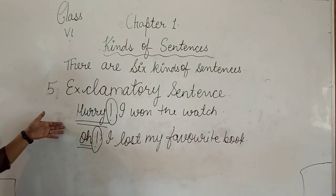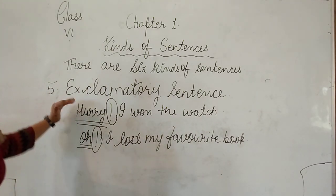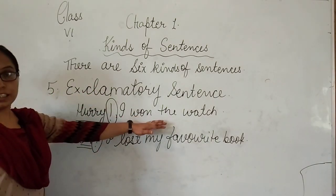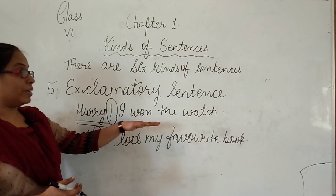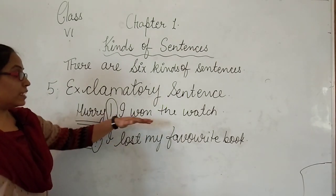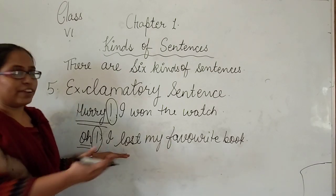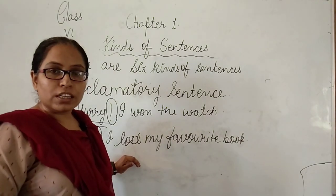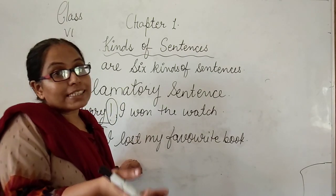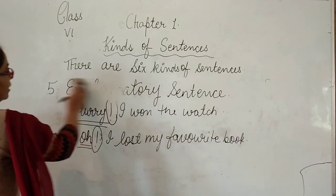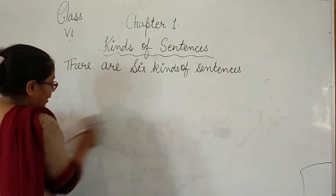These words like hooray and oh are also called interjections — I will cover that topic in the next class as it is also included in your syllabus. To identify an exclamatory sentence: read the sentence, find the expression, and determine whether the feeling expressed is happiness or sadness. When a sentence expresses any sudden feeling — happy or sad — it is called an exclamatory sentence.